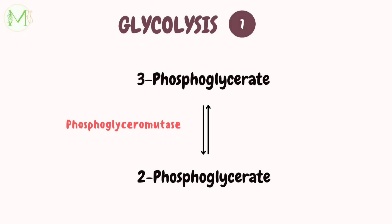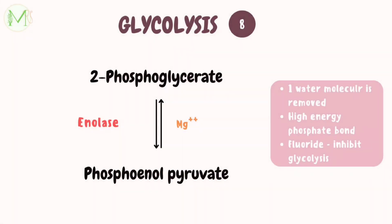In step 7, 3-phosphoglycerate is isomerized to 2-phosphoglycerate by shifting the phosphate group from the 3rd to the 2nd carbon. The enzyme is phosphoglyceromutase, which makes it a reversible reaction. Once 2-phosphoglycerate is formed, the enzyme enolase converts it into phosphoenolpyruvate, where one water molecule is removed. A high energy phosphate bond is thus produced.